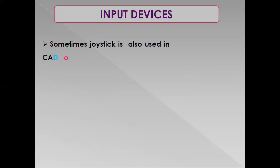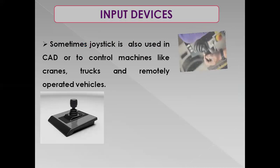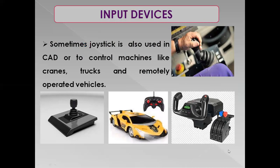More uses of joysticks: sometimes joysticks are also used in CAD — computer-aided designs — or to control machines like cranes, trucks, and remotely operated vehicles. You can see this is a toy remote-controlled car — it also has two joysticks, one for moving in forward and backward direction and the other one for moving left and right. Some joysticks might have only one that can move in all four directions. Cranes, which are used to lift heavy weights, also use joysticks as an input device to direct the machinery.